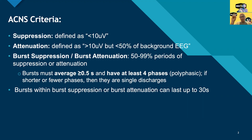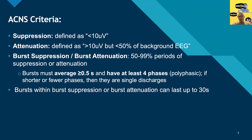Attenuation — the voltage goes down by at least 50%, but maybe not all the way down to 10 microvolts. We use the terms burst attenuation or burst suppression when we're getting attenuations or suppressions — these episodes of flattening of the EEG that take up at least 50% of an epoch. On a 15-second page, you'd need at least half of that to be attenuated or suppressed.